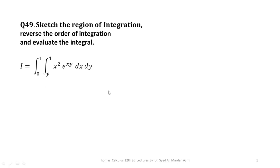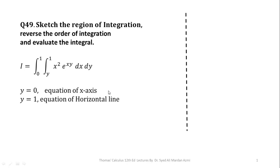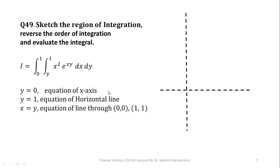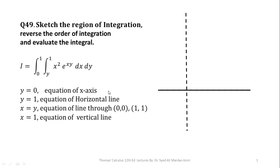First of all, we will write down the boundaries by equating the inner and outer variables with the limiting values. For the outer variable, y equals 0 for the lower limit and y equals 1 for the upper limit. Similarly, y equals x is an equation which passes through points where x and y have the same value in the ordered pairs. And x equals 1 is the equation of a vertical line.